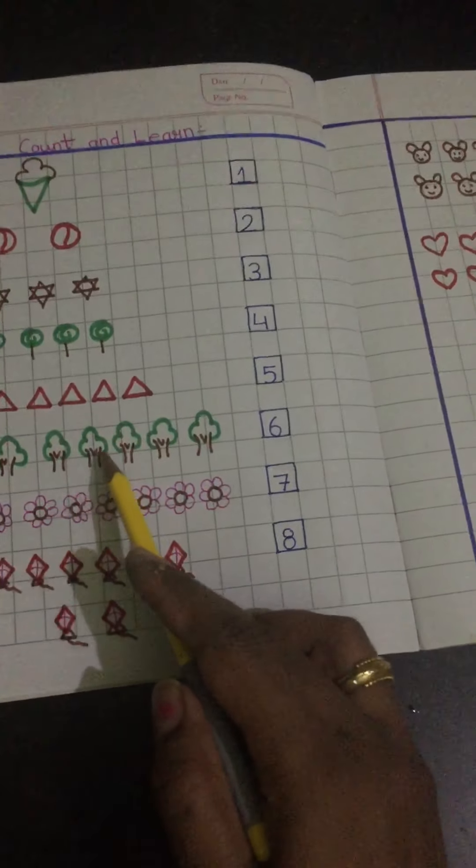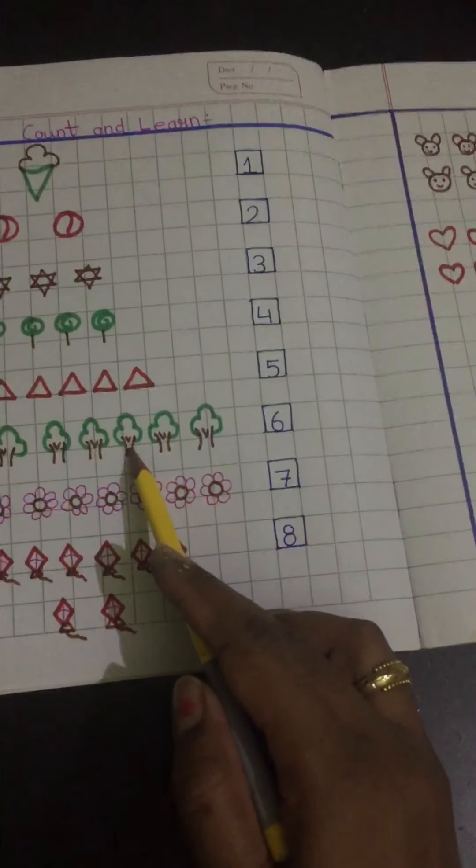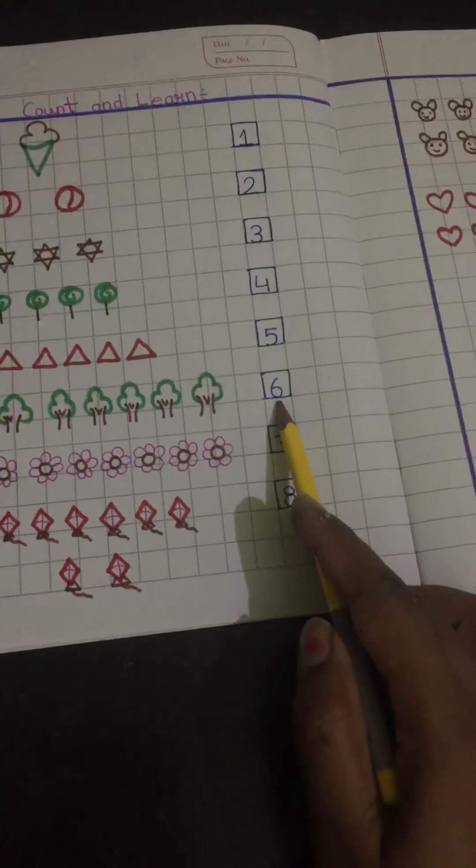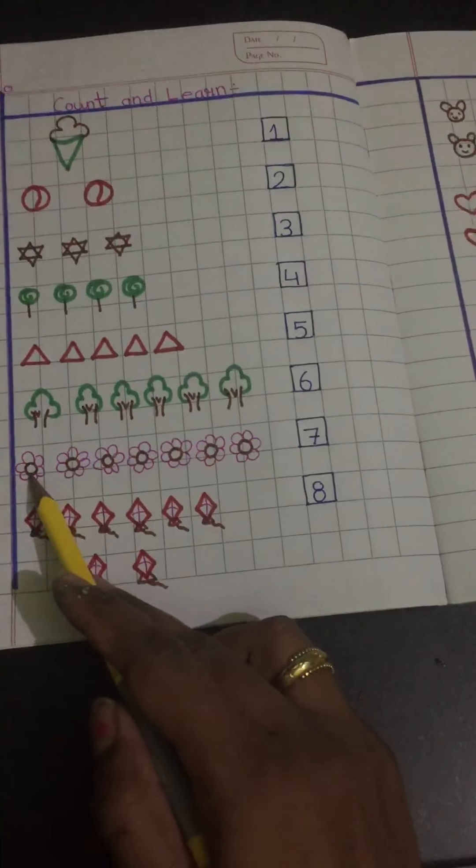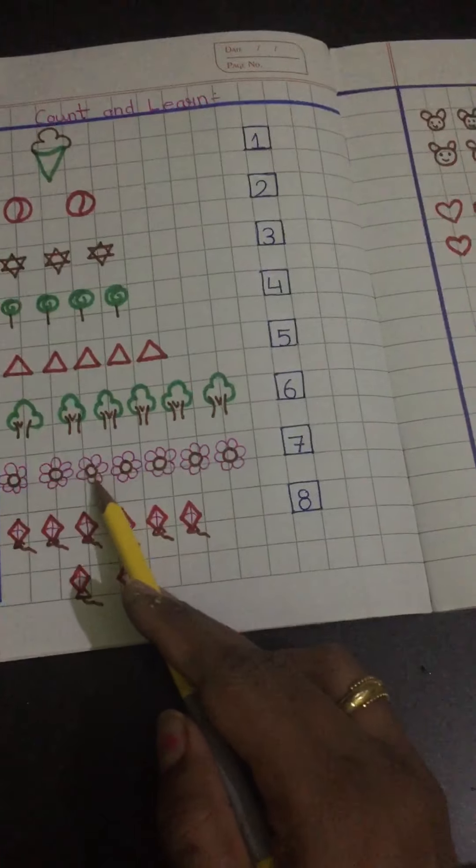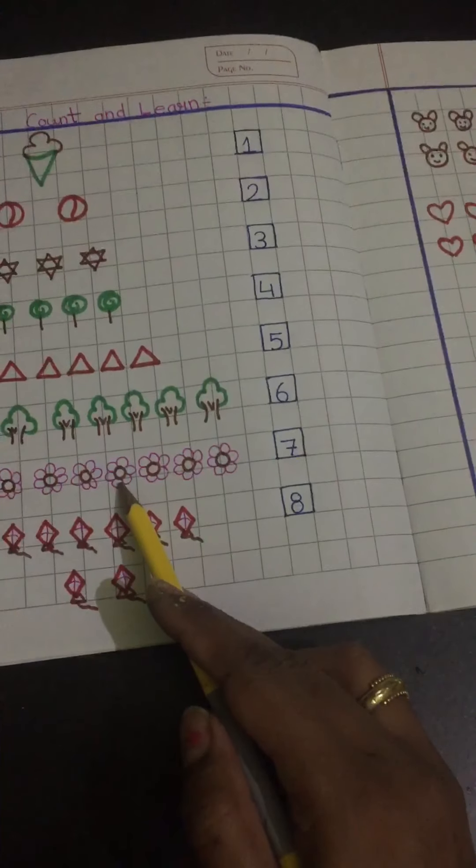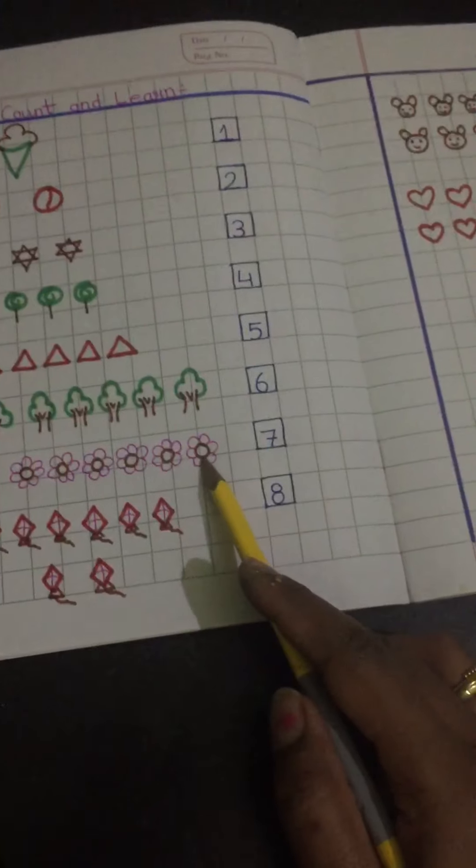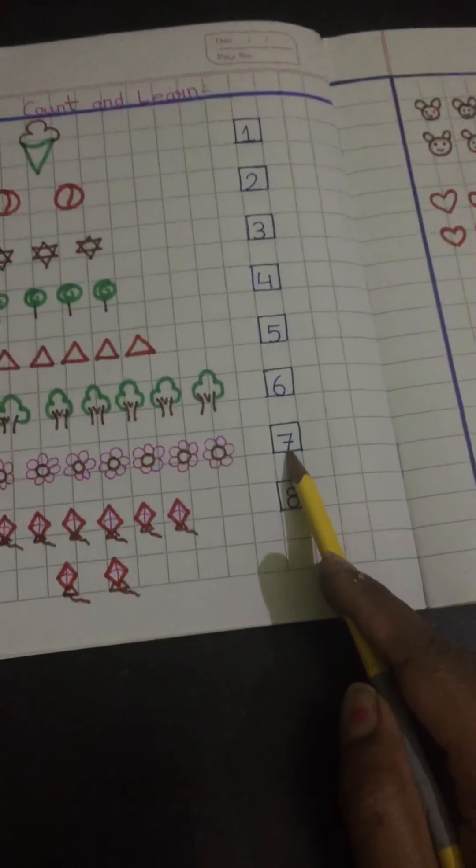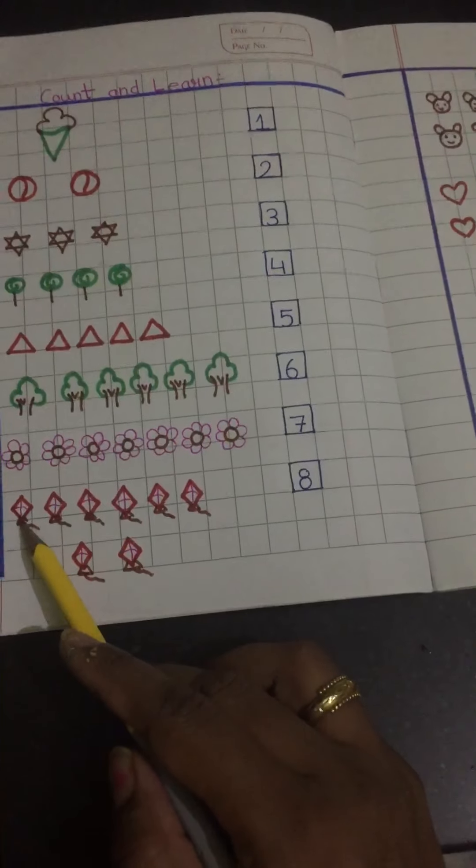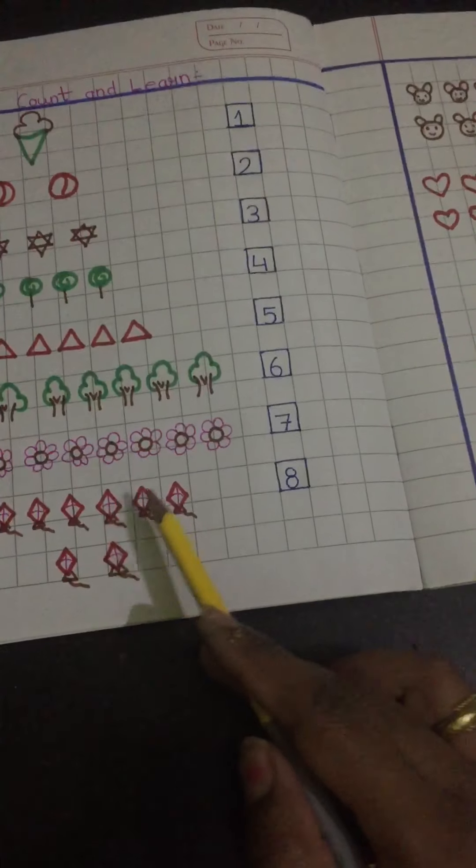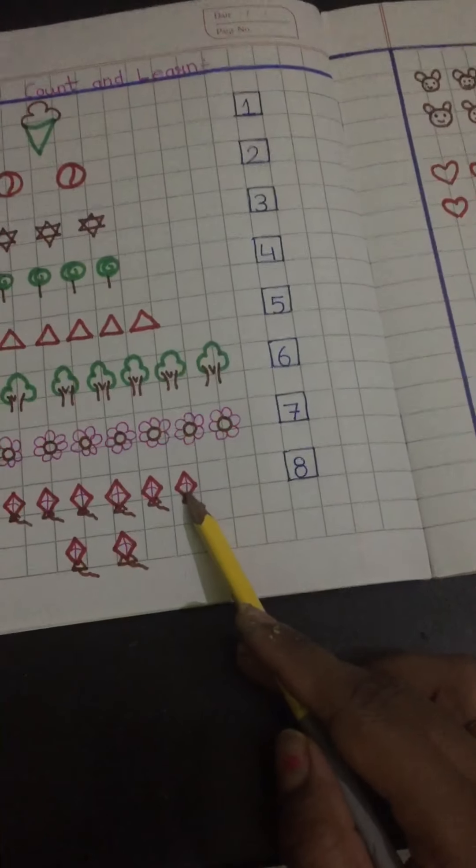Two, three, four, five, six. Six. One, two, three, four, five, six, seven. Seven. One, two, three, four, five, six.